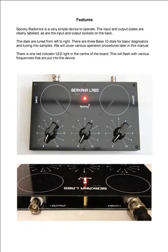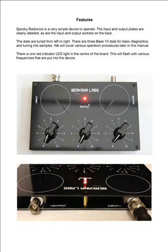Spooky Radionics is a very simple device to operate. The input and output plates are clearly labeled, as are the input and output sockets on the back. The dials are tuned from left to right. There are three base 10 dials for basic diagnostics and tuning into samples. There is one red indicator LED light in the center of the board, which will flash with various frequencies that are put into the device.